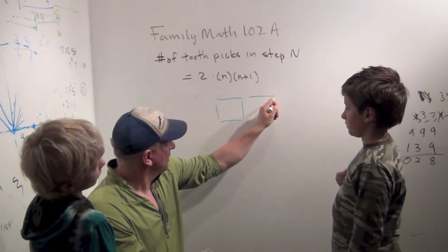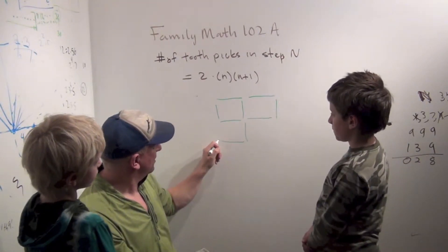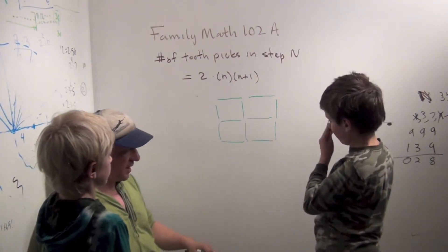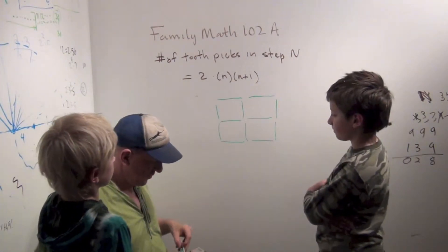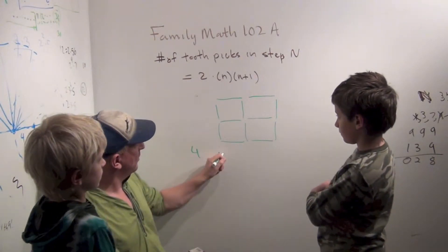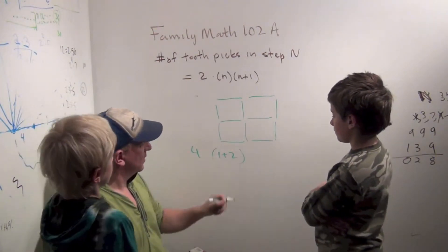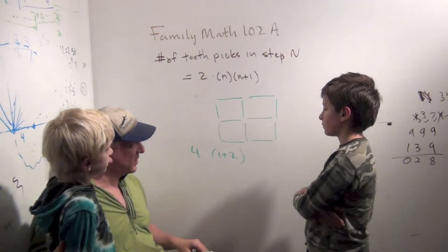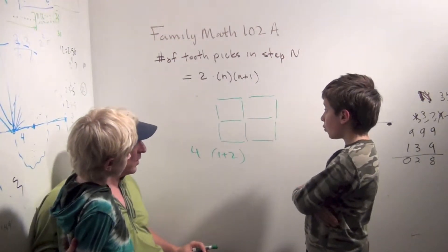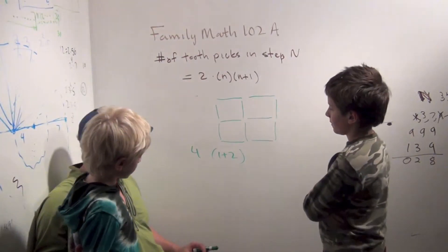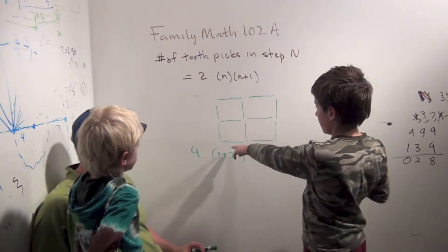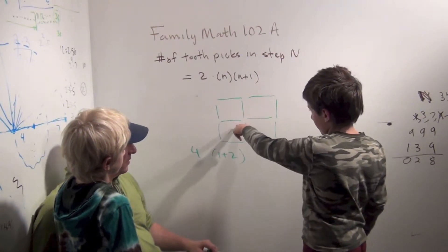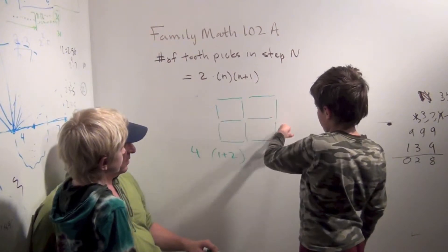Now let's extend this. Four 1 plus 2's — this is going to be a little harder. We're looking for 4 things together that are a 1 and a 2. Can you chop this picture up into 4 things that look exactly the same and they're all 1 plus 2's? So here's a 2, 1, 2, 1, 2, 1, 2, 1.